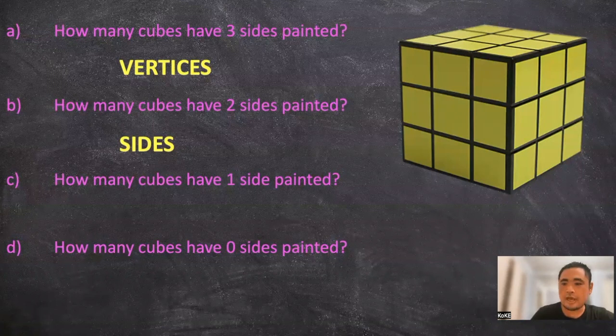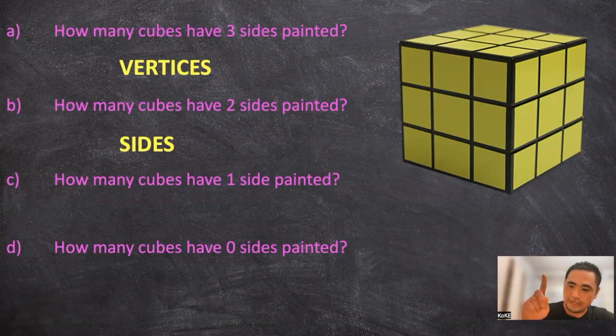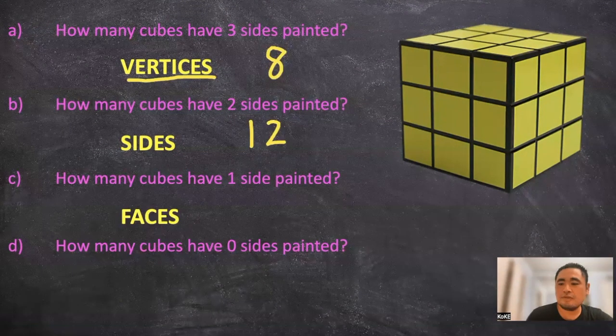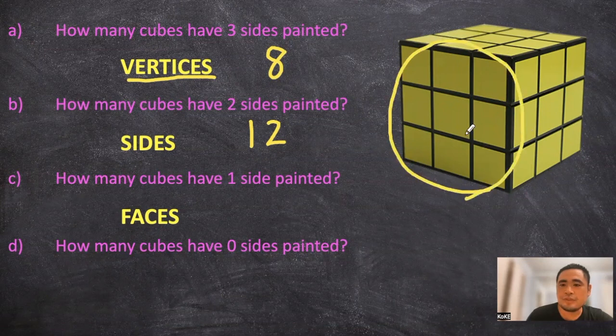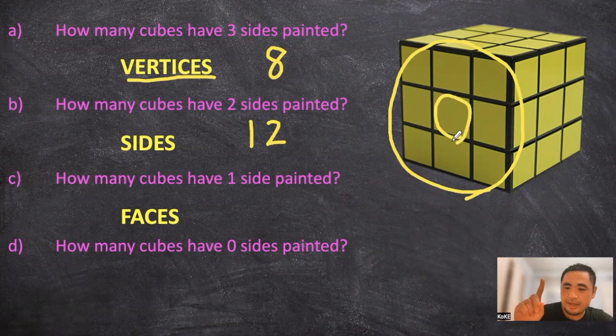Part C, how many sides have 1 side painted? For this one, we can take a look at the number of faces of the cube. If you take a look at this face, there's 1 center cube that's going to have 1 side painted. And because there are 6 faces to the entire cube, there are 6 small cubes that are painted with only 1 side.